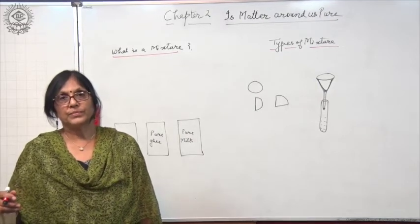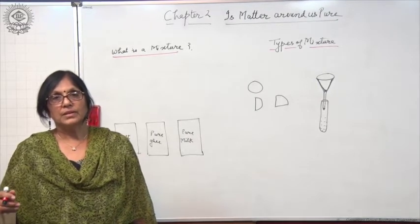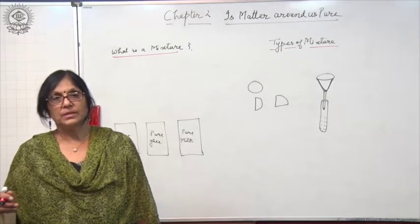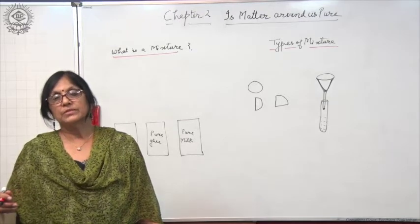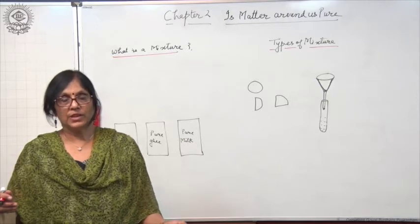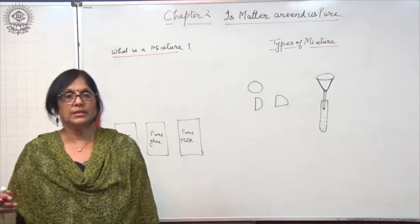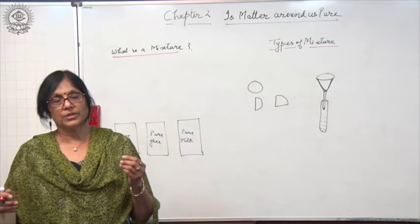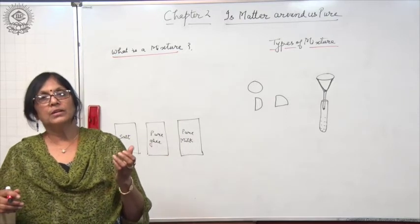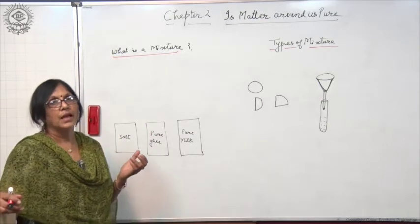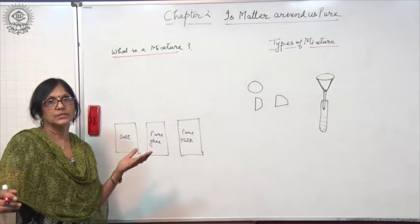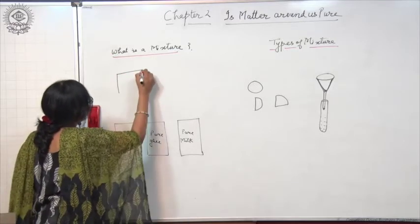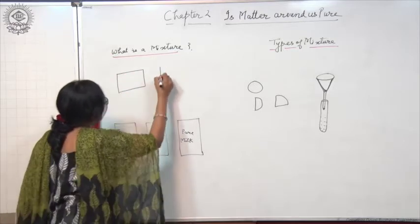Chapter 2 is Matter Around Us Pure. Let us observe certain things which are used in daily life. Go to the kitchen and collect some sugar and spread it on a piece of paper, and also go to your garden and collect some soil and spread it on a piece of paper. What will you find?